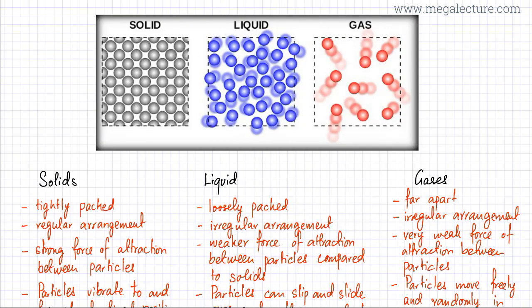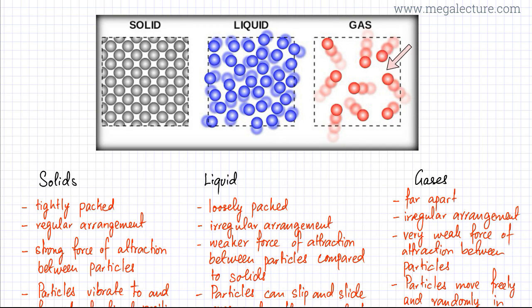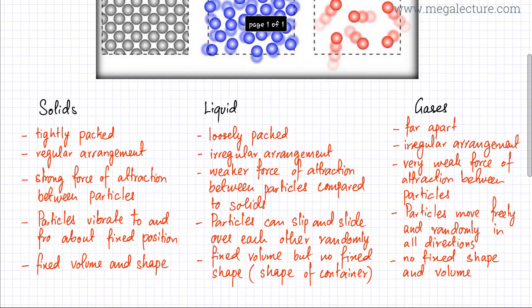Lastly, we're going to discuss the gaseous state. In a gas, the particles are very energetic and freely moving in all directions. The forces of attraction can be easily overcome because these particles are now extremely energetic, so they can easily overcome the forces of attraction that were keeping them together. Now they can freely move in all directions. The gaps between particles are much greater compared to liquids and solids, and the energy is greater. So all the gas particles are just freely and randomly jumping around.